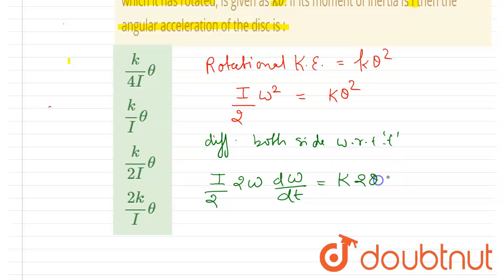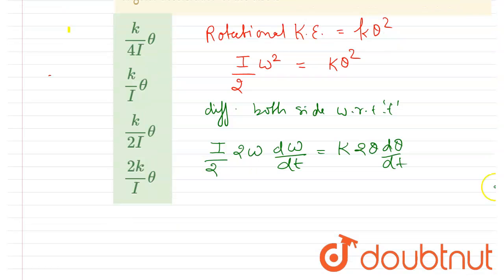So this two will get cancelled out, and you can write d theta by dt is the rate of change of angular displacement, which is angular velocity omega.